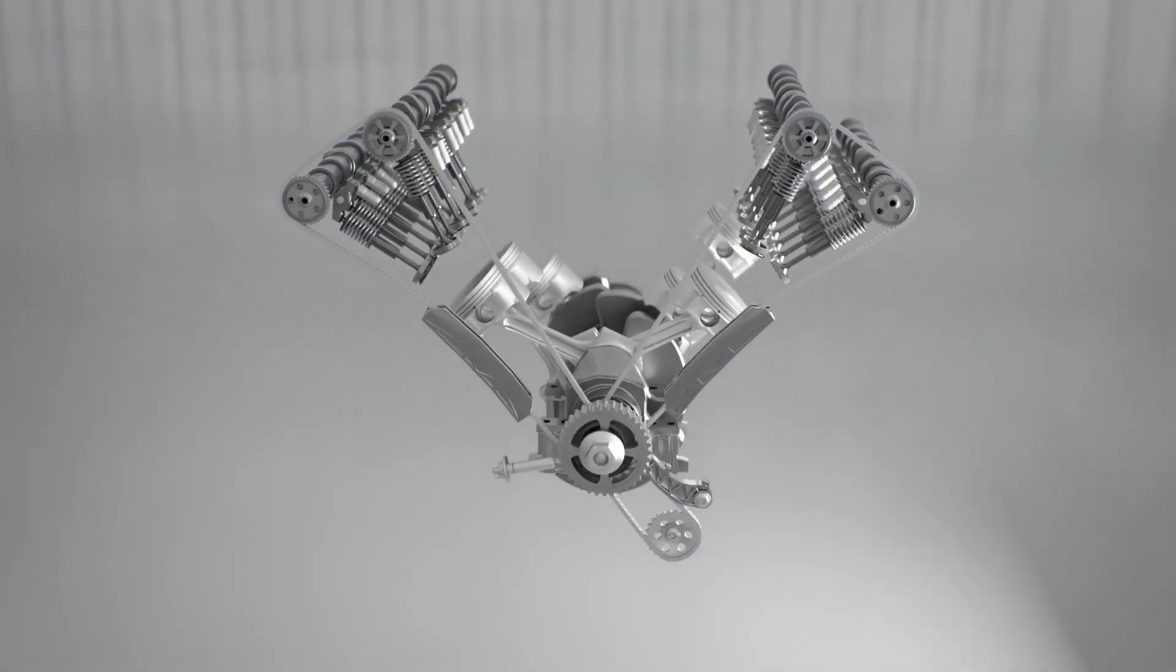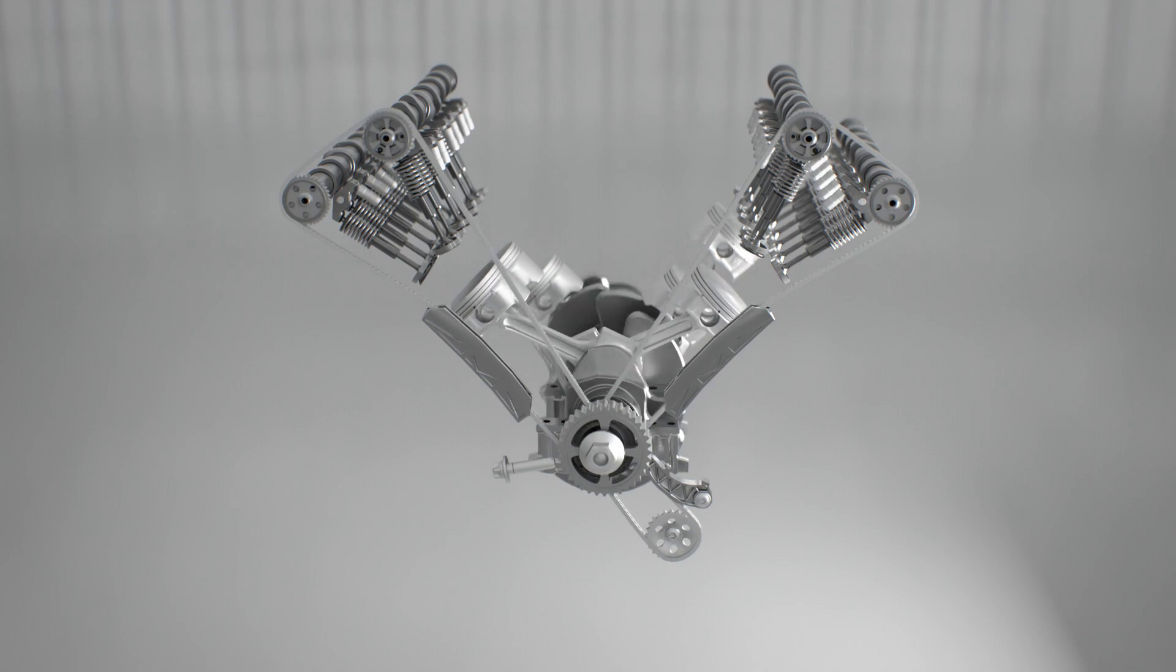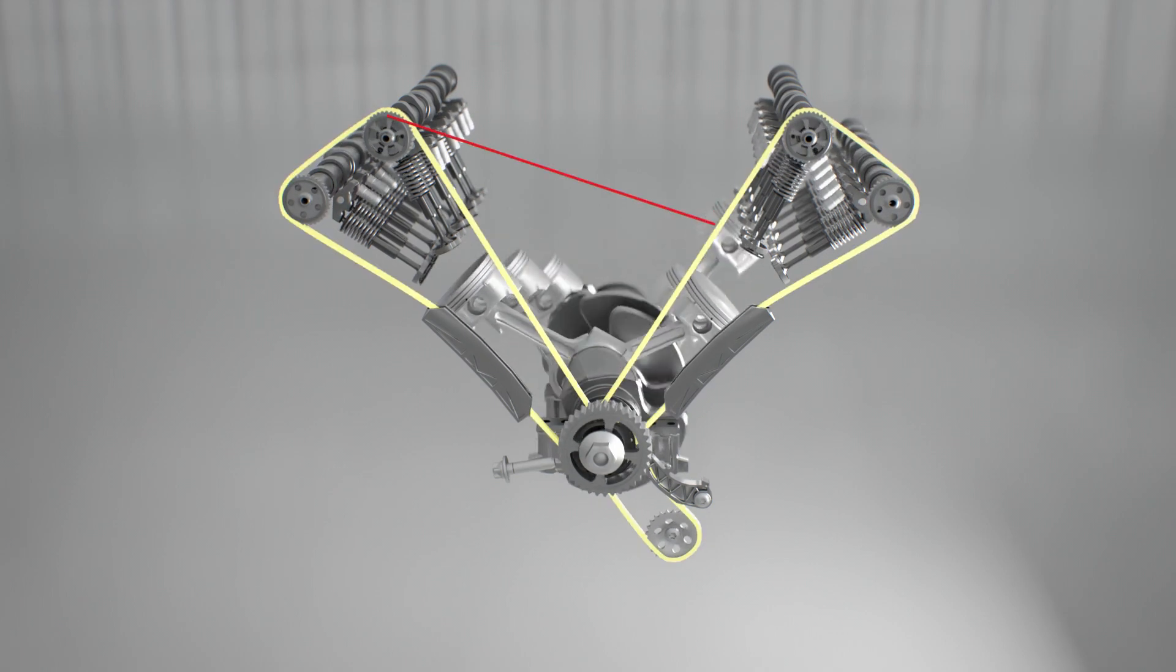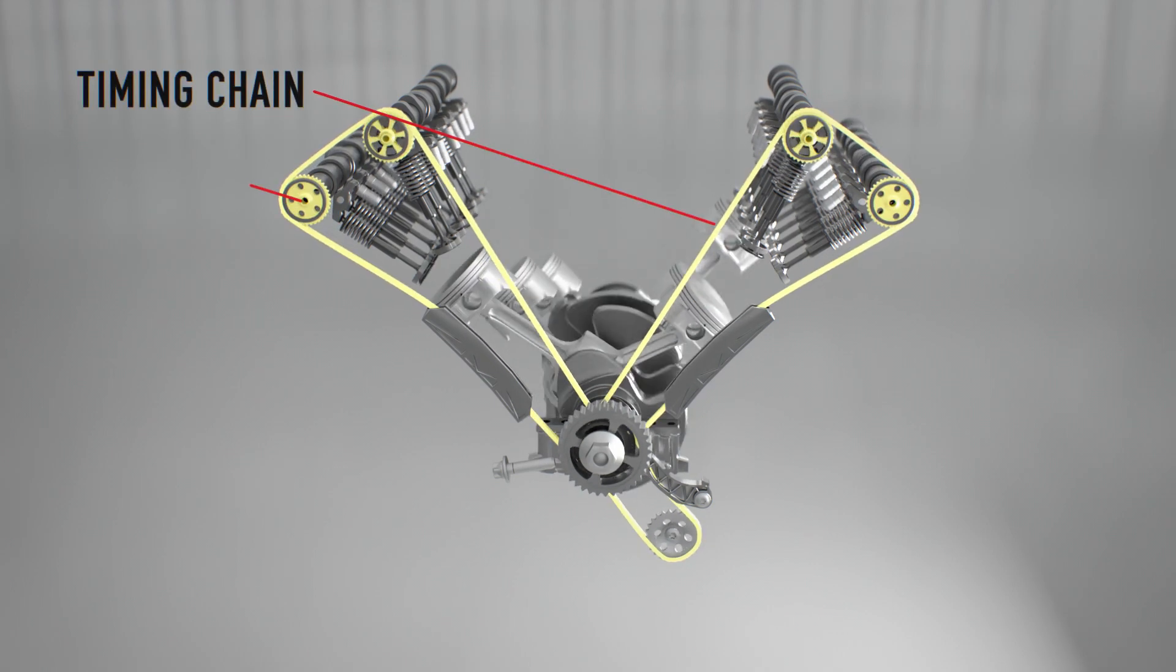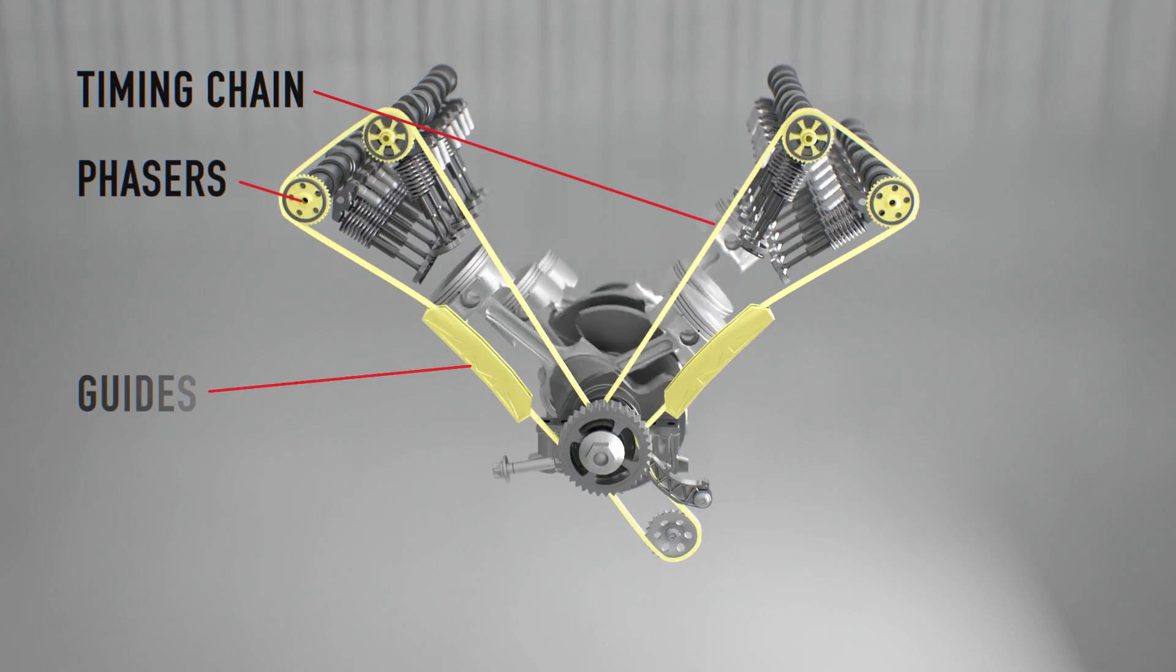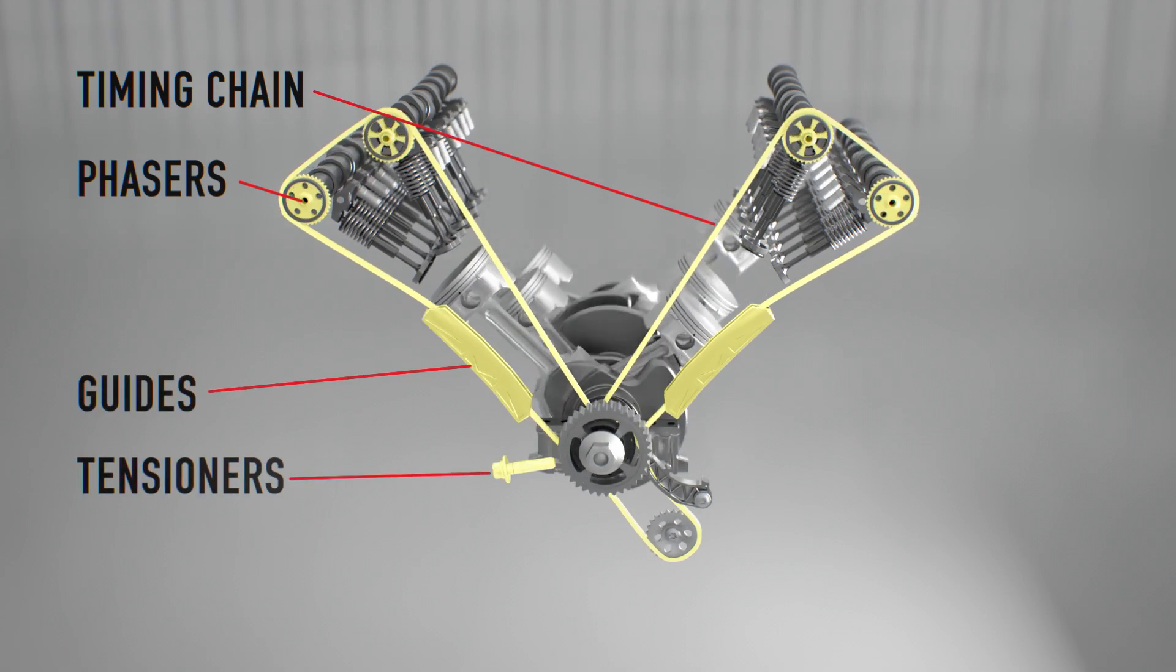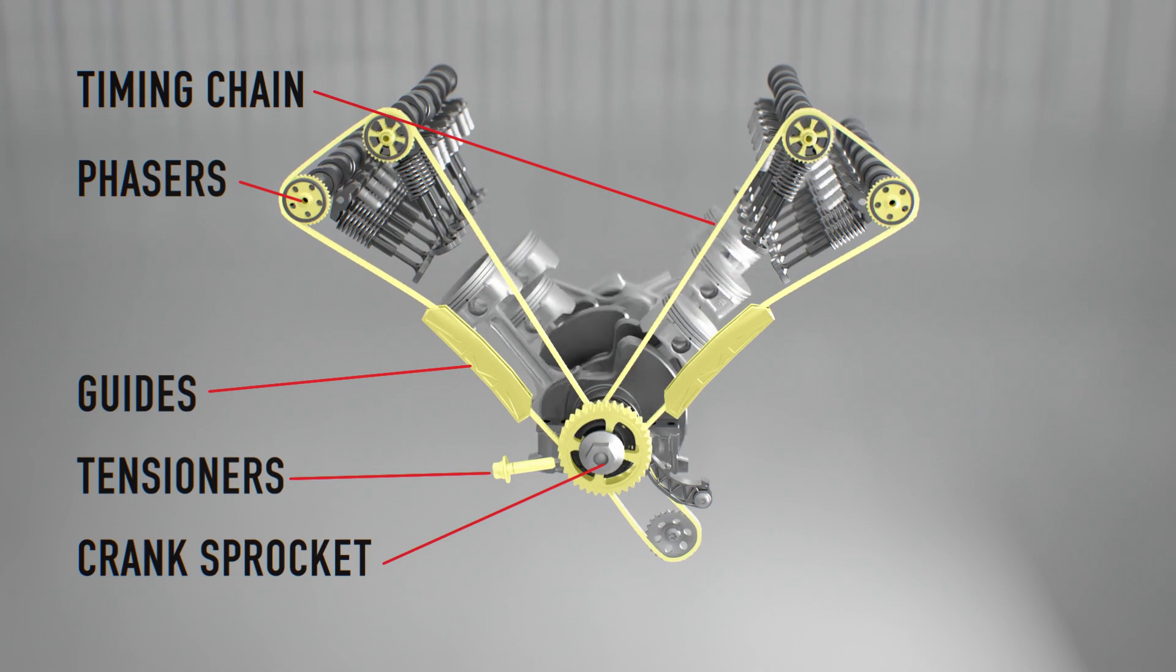When looking at the VVT system, the technician should first understand the system components. The timing chain, phasers, guides, tensioners, and crank sprocket make up the VVT system.